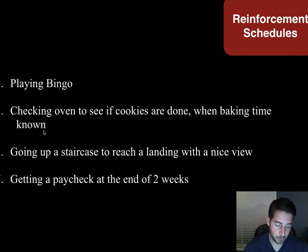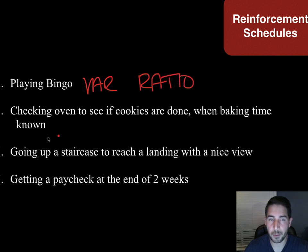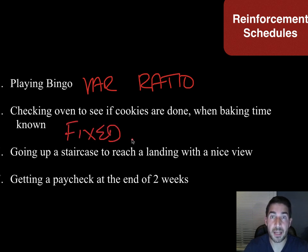Playing bingo: do you know when you're going to win? No — variable. Does your behavior have something to do with it? Yes — ratio. You have to play to win. Checking the oven to see if cookies are done when baking time is known — that's fixed. Does your behavior have anything to do with when the cookies are going to be done? No. So that's interval.